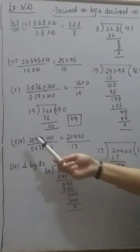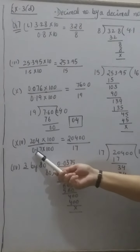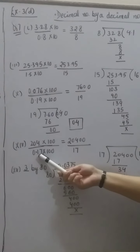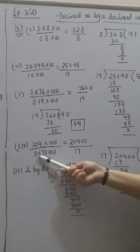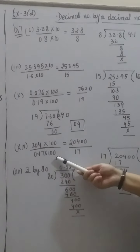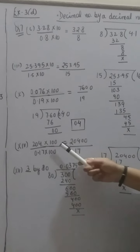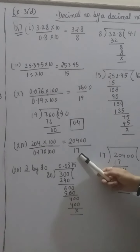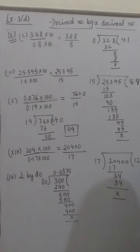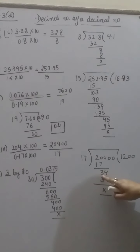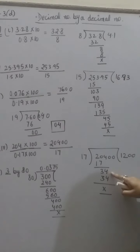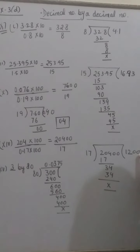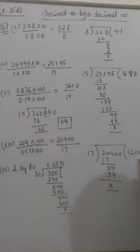14th part: 204 divided by 0.17. The divisor has two decimal places, so we multiply by 100. We get 20400 divided by 17. 17 ones are 17; we are left with 34. 17 twos are 34. Bringing down the remaining zeros, our answer is 1200.